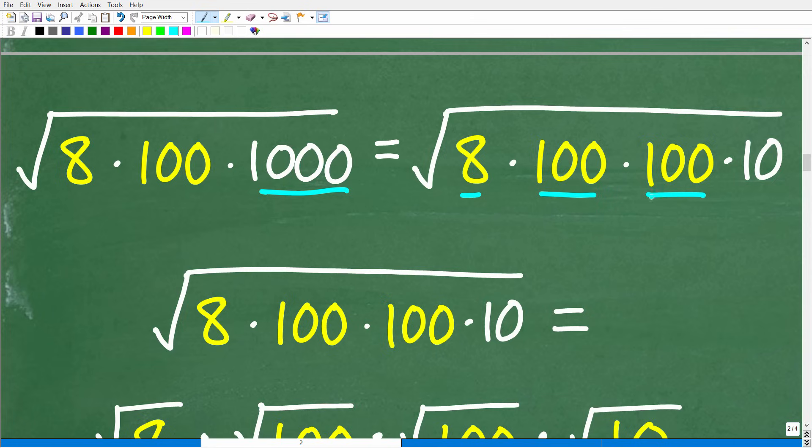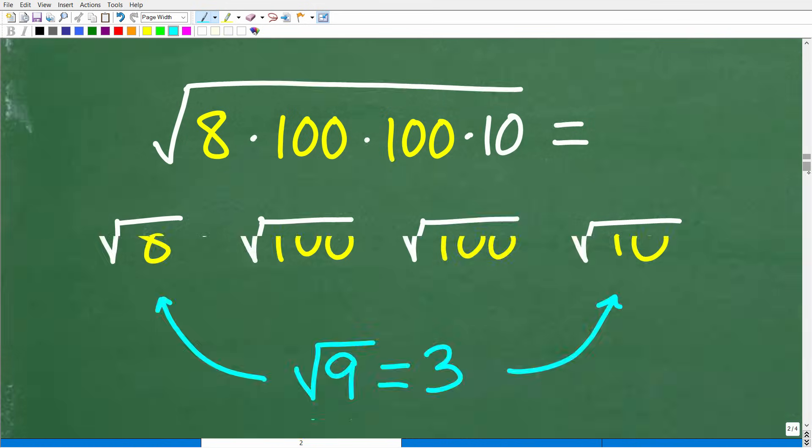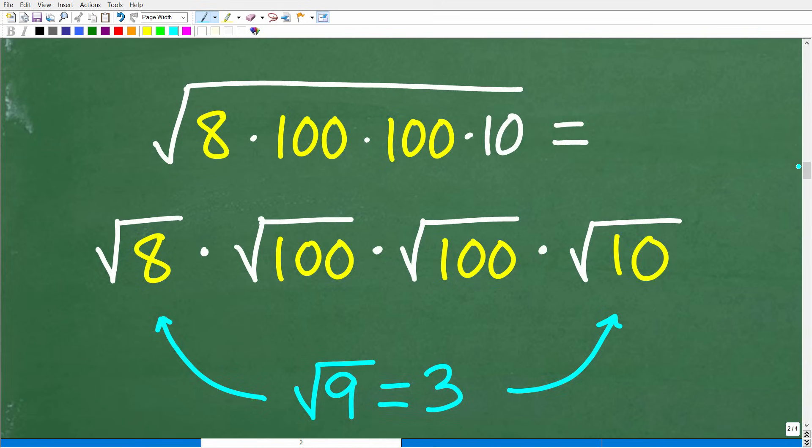So at this point, I'm basically ready to start making some estimates here. Remember, the objective is to go pretty quickly, and there's different approaches you could take to do this problem. In other words, some of you could look at different factors. It's perfectly fine as long as you could do this pretty quickly. So let's go ahead and take a look at the problem now. We have the square root of 8 times 100 times 100 times 10. And so now we can break these up into their individual square roots. So we have the square root of 8 times the square root of 100 times the square root of 100 times the square root of 10.